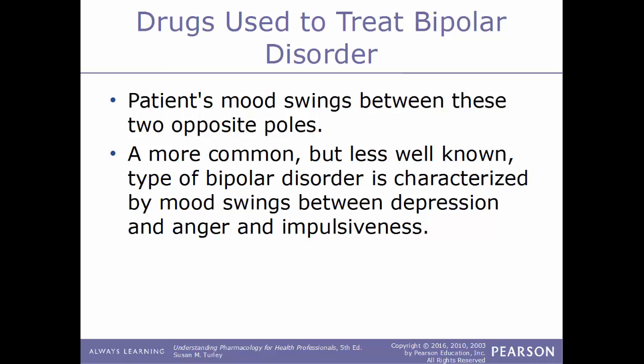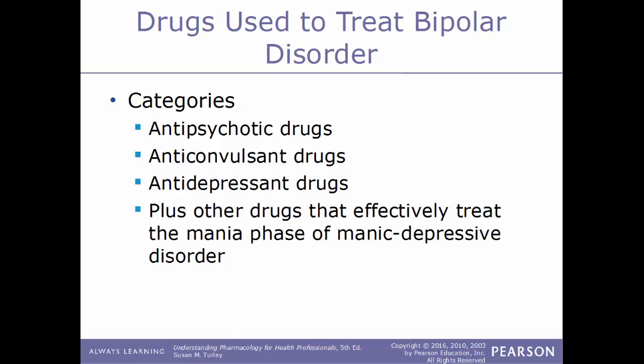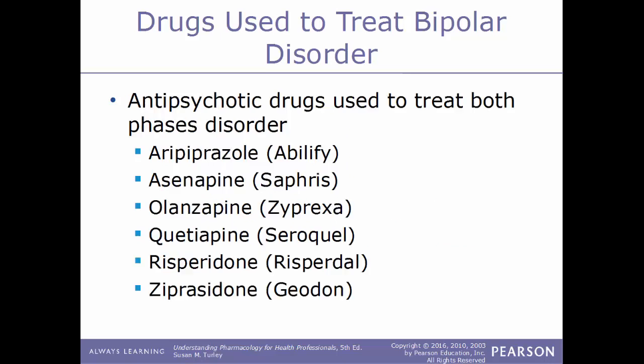A more common but less well-known type of bipolar disorder is characterized by mood swings between depression, anger, and impulsiveness. Drugs used to treat manic depressive disorder lessen the severity and frequency of these mood swings — called mood-stabilizing drugs. These can be antipsychotics, anticonvulsants, antidepressants, or other drugs that effectively treat the mania phase.